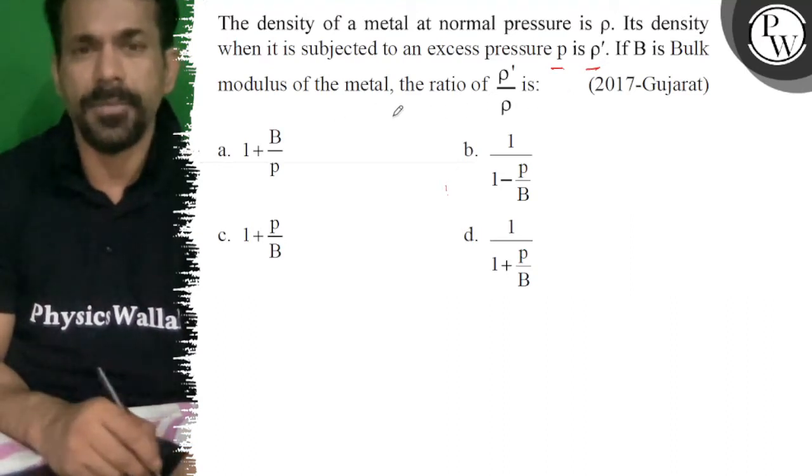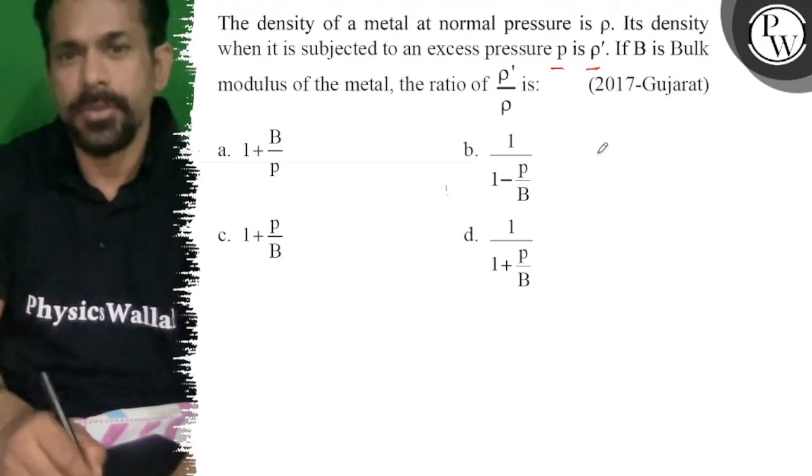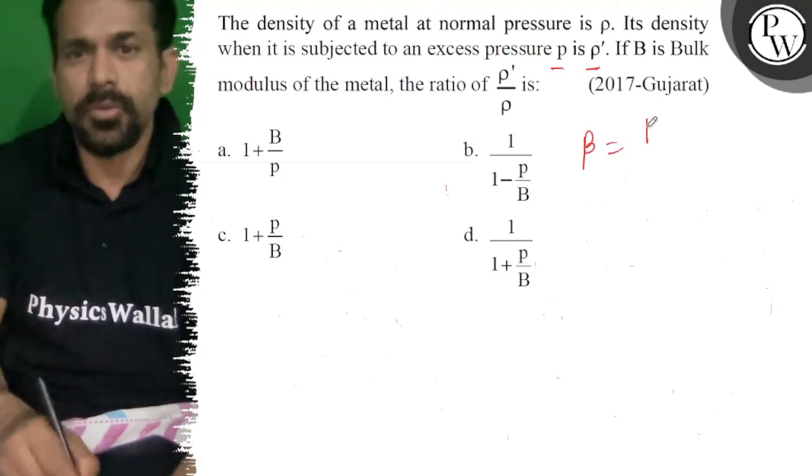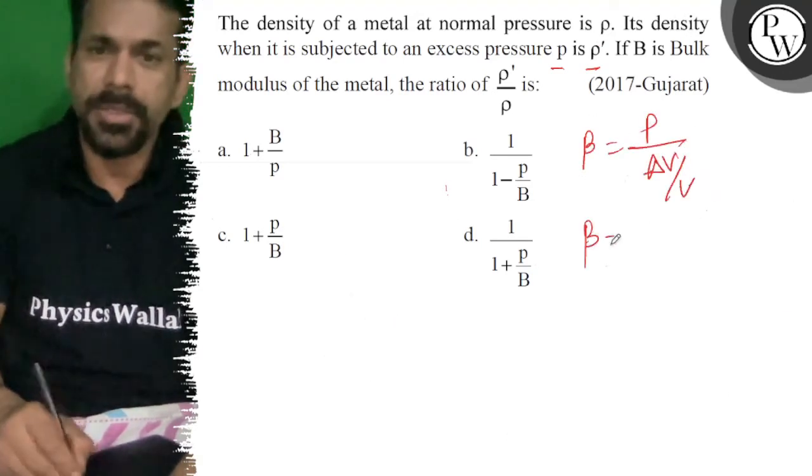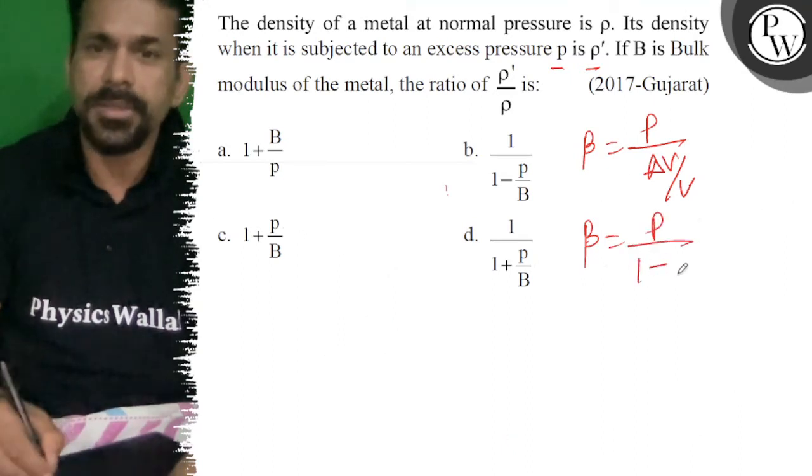If β is the bulk modulus of the metal, the ratio of ρ dash by ρ. So β is equal to p upon ΔV by V. Okay, so β is equal to p upon 1 minus V dash over V.